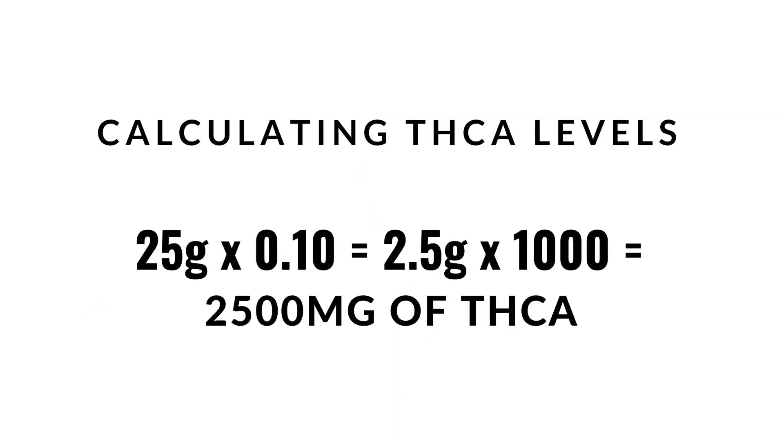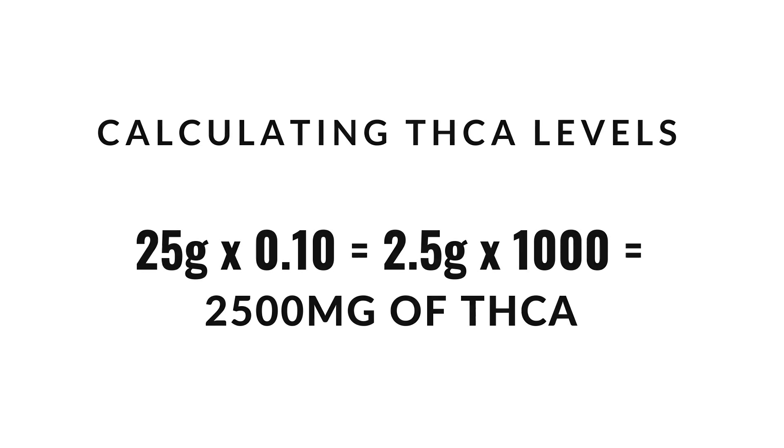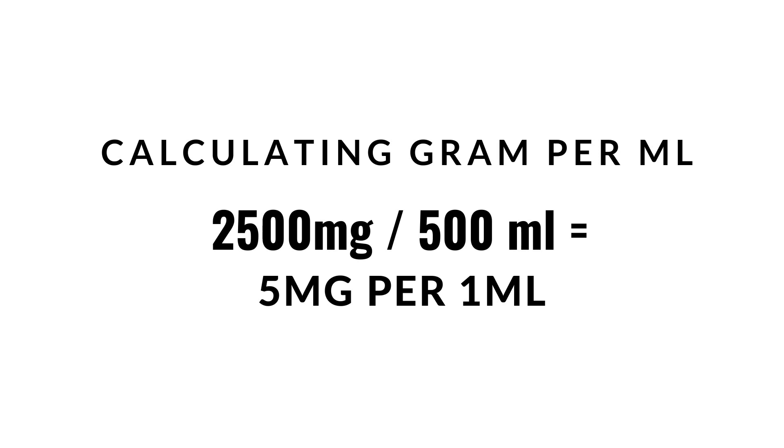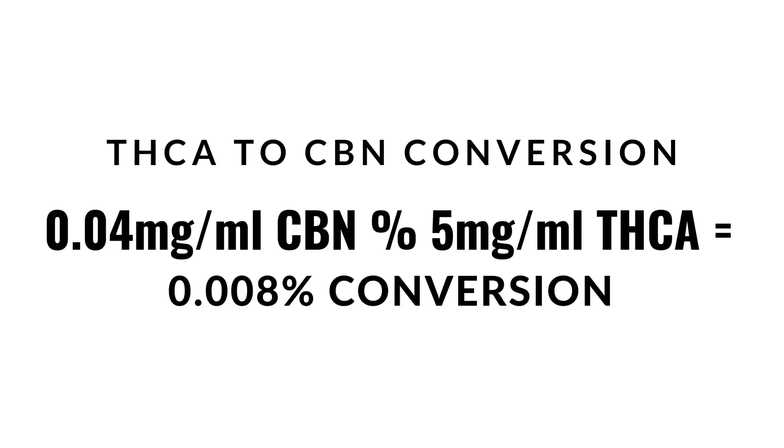While the THC levels of the KEAF were not disclosed in this study, we can assume that 25 grams of KEAF is at least 10% THCA, giving us 2,500 milligrams of THCA — that's 5 milligrams per milliliter. So after 24 hours, only 0.4 milligrams per milliliter was converted to CBN. That means only 0.008% of our starting ratio of THCA was ultimately converted to CBN after 24 hours of heat at 250 degrees Fahrenheit. You do not have to worry about over-decarboxylating your cannabis. I hope this sets your mind at ease when you're decarbing in the future — good luck making some edibles.